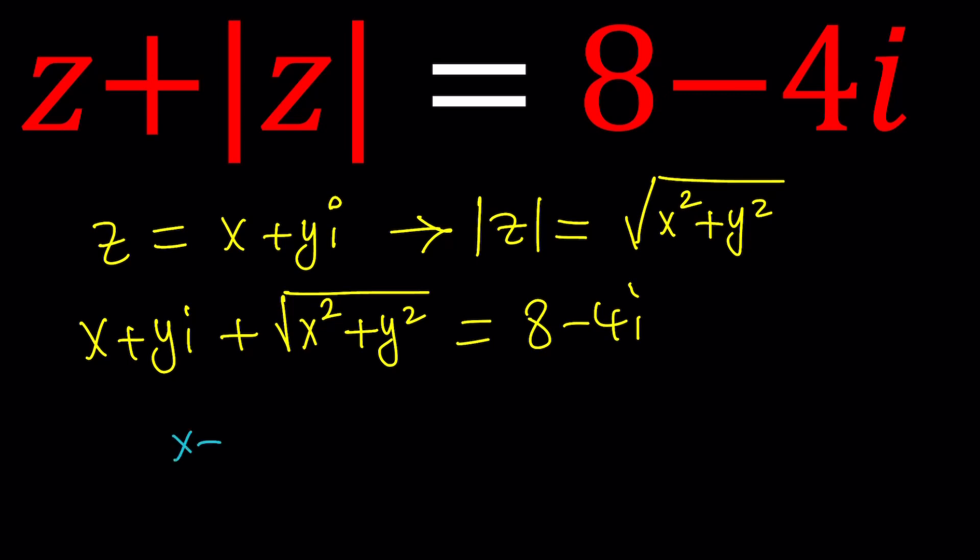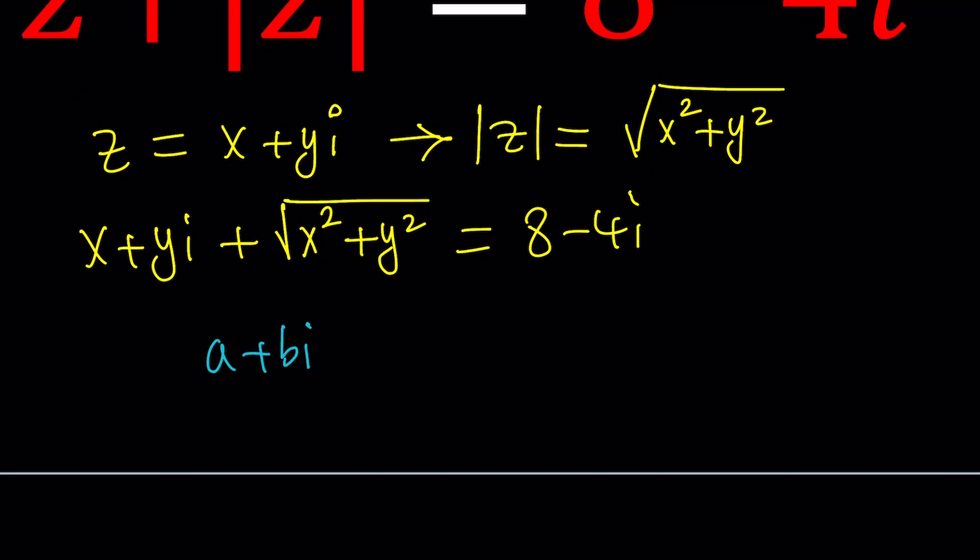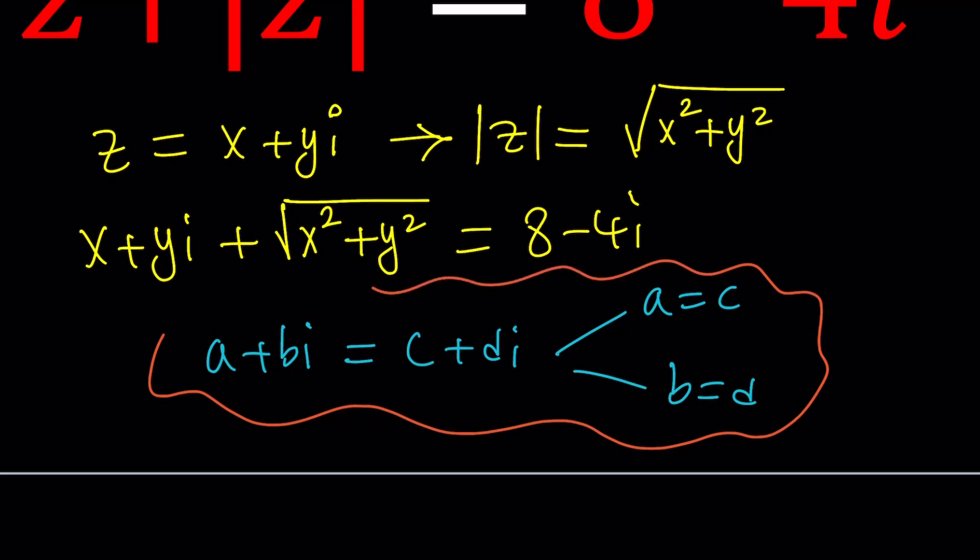Because if two complex numbers are equal, let's remember that rule. If X plus YI, or I probably shouldn't use X plus YI in this case because we're using it. But let's say if A plus BI is equal to C plus DI, this needs to happen. Two things must happen. A equals C and B equals D. If one of these fails, then the equality is not going to be maintained. Make sense? So, this is an important rule. Something we didn't talk about in the lecture notes. But I'm hoping that it's pretty straightforward.